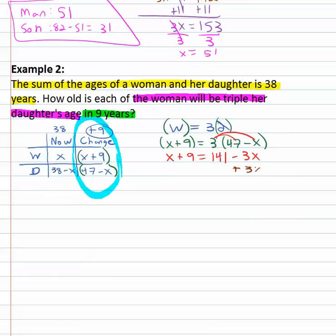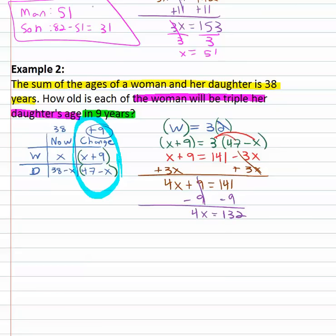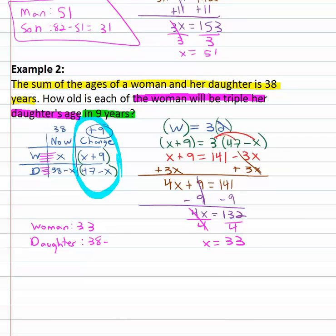Get the variable on one side by adding three x to both sides: four x plus nine equals one forty-one. Two-step equation — subtract nine from both sides: four x equals one thirty-two. Divide both sides by four and x equals thirty-three. X is the woman, so the woman is thirty-three. The daughter is thirty-eight minus x right now: thirty-eight minus thirty-three — she's only five years old right now. If we're given the sum now, we use x for the first person and for the other person it's the total minus x.